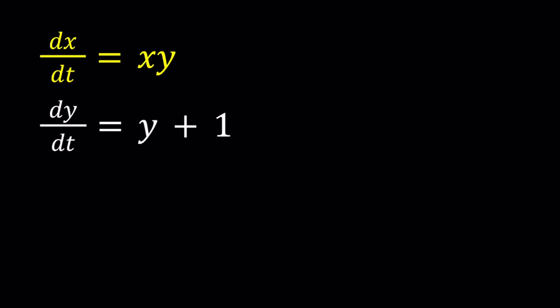So we have this system where we have dx over dt equals xy and dy over dt equals y plus 1. So let's talk a little bit about how this works.